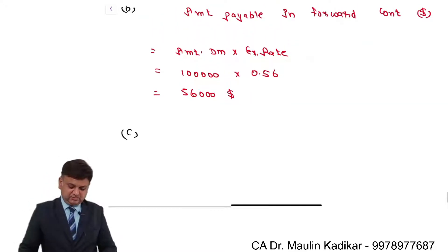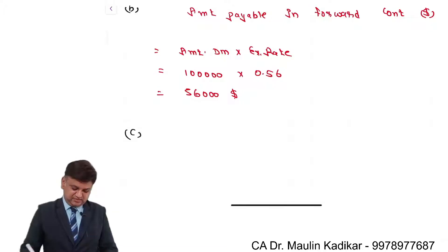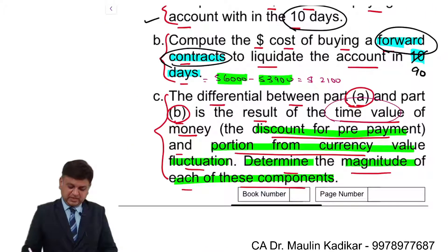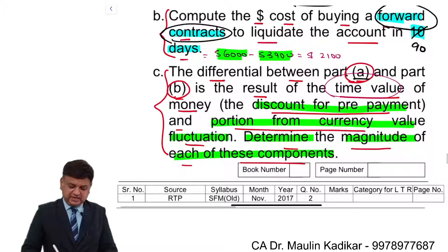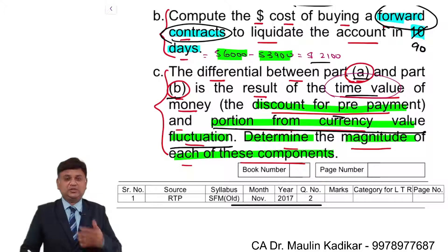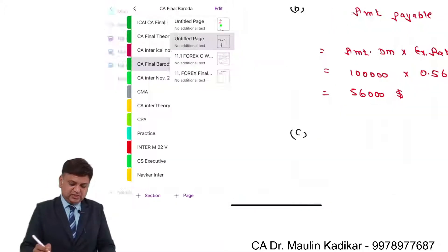C question. Because in this case you will not be getting the discount advantage. Differential between part A and part B, that is 2100 dollar, is a result of time value of money - that is the discount for prepayment portion - and portion from the currency value fluctuation. Because the dollar currency depreciates. Determine magnitude of each of these components.